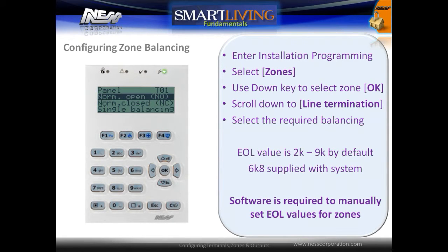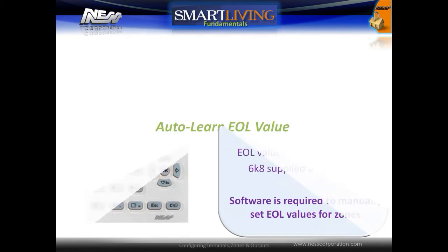To configure zone balancing, enter into installation programming, scroll down to Zones, use the down key to select the zone to program, and press OK. Scroll down and select Line Termination, then select the required balancing. The system will automatically recognize a 2k to 9k end-of-line resistor value. 6k8 is supplied with the system. Using the software, individual end-of-line resistor values can be programmed per zone if required.